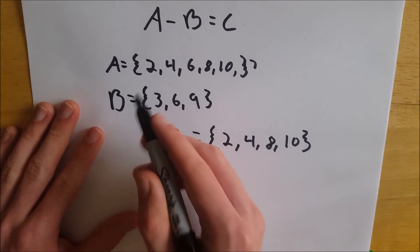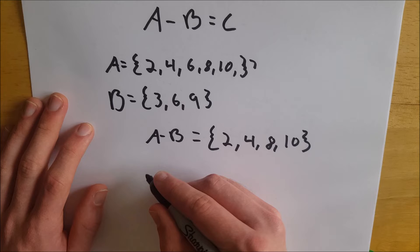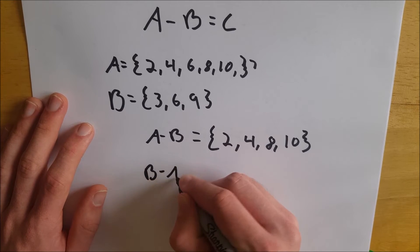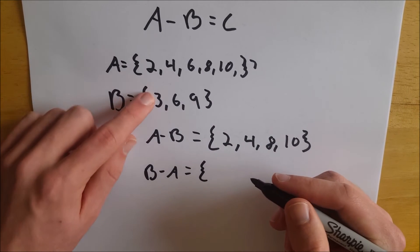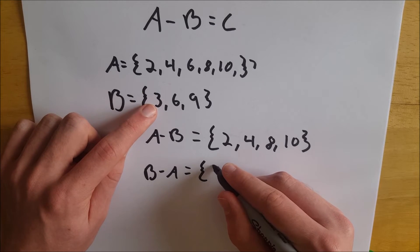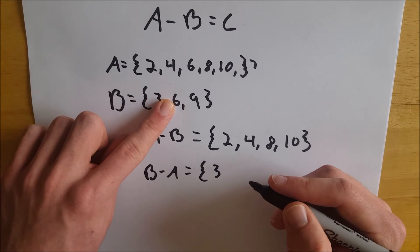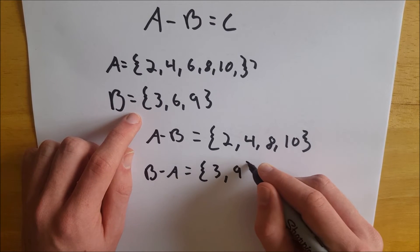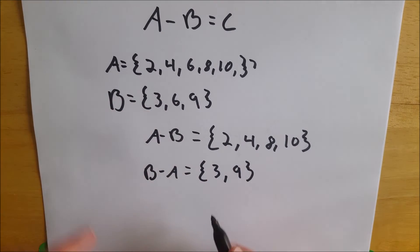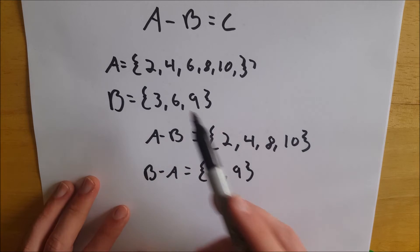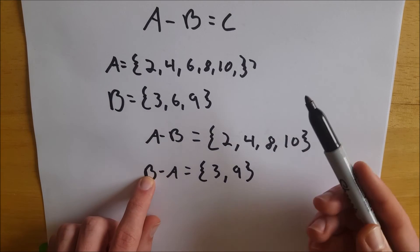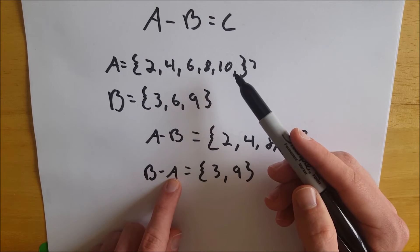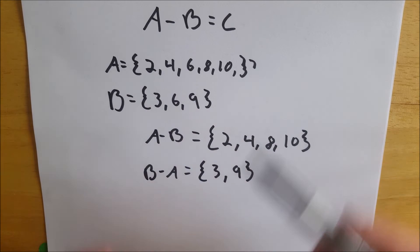So let's do this in the opposite order so you can see that as well. If we were to do B minus A, we'd get 3 because 3 isn't in A. We wouldn't get 6 because 6 is even, so that's taken away, but we would get 9. So B minus A would just be 3 and 9 because 3 and 9 are the only elements that fulfill the requirements of being in B, our first set, but not in A, the set that we're taking away from B.